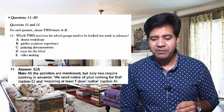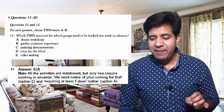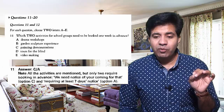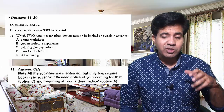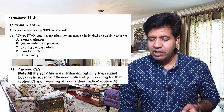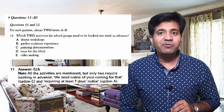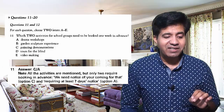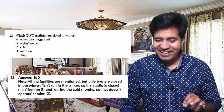Welcome back with the answer key. Question 11: the answer is C and A. Note that all the activities are mentioned, but only two require booking in advance. These two activities are drama workshop and painting demonstrations. For option C they say 'we need notice of your coming,' and for option A they say 'requiring at least seven days' notice.' So option A and option C are correct for question 11.